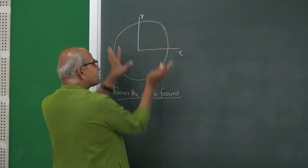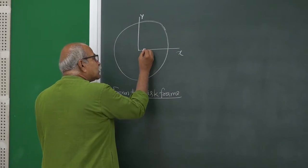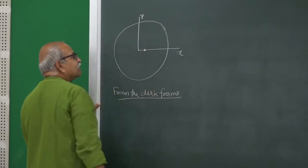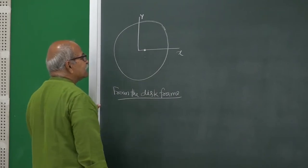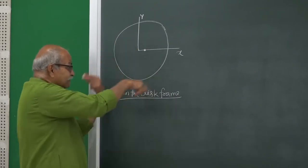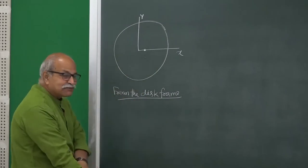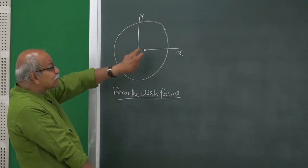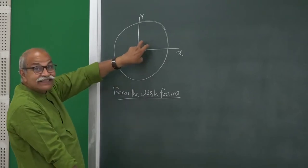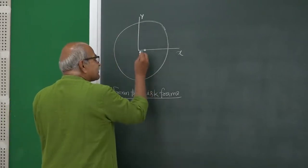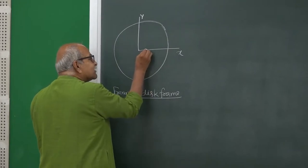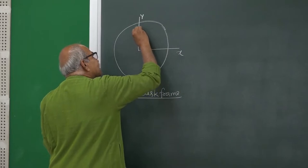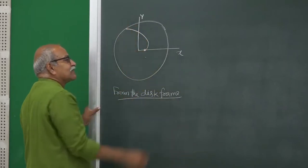I put the particle — that small black ring-type object — here, and then I give it a rotation. When I say I give it a rotation, I am talking from the lab frame. The path of the particle is still seen in the disk frame. In the disk frame it went like this and then reached the periphery.